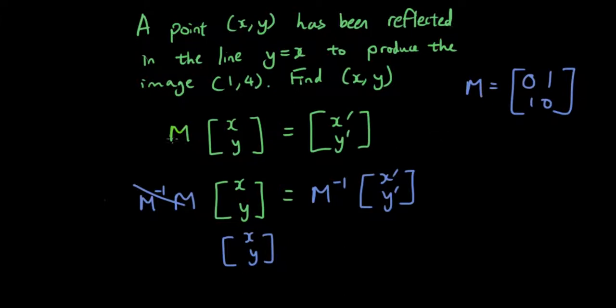So substituting that over here, we then find the inverse of it. So using the equation to find the inverse, it will be 1 over 0 times 0 minus 1 times 1. So it's just negative 1.